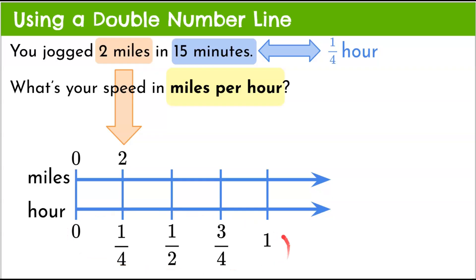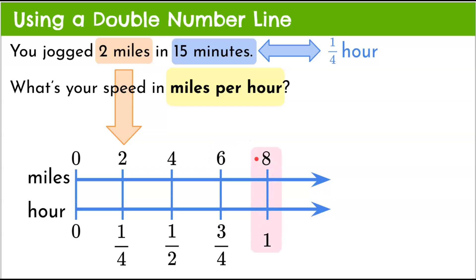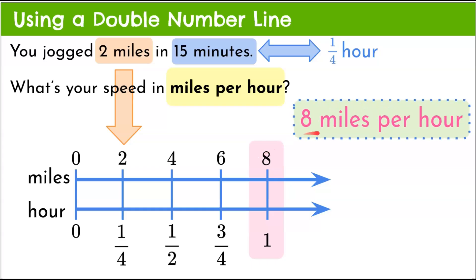We have our one hour sectioned off in fourths because every fourth of an hour we go two miles. Going two more miles gets us to half an hour — two plus two is four, plus another two is six, and another two is eight. This is how we model it on a double number line: eight miles per hour.